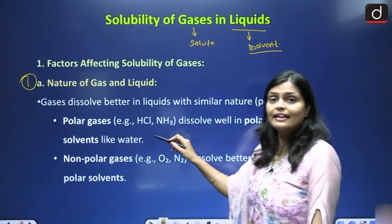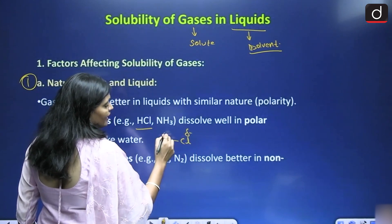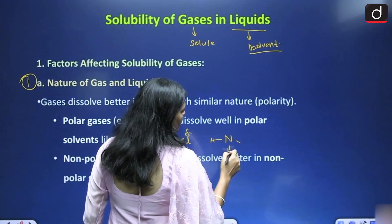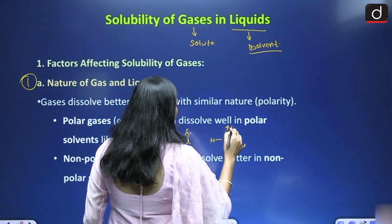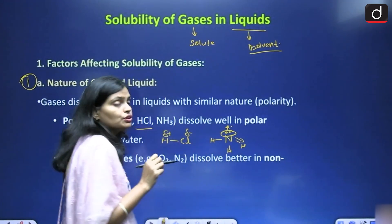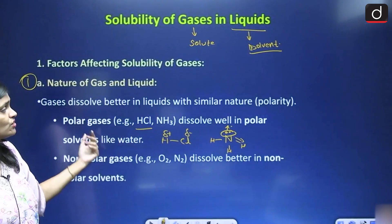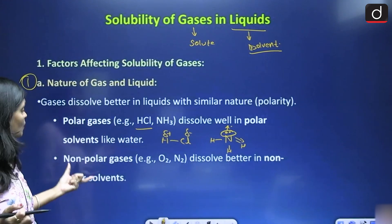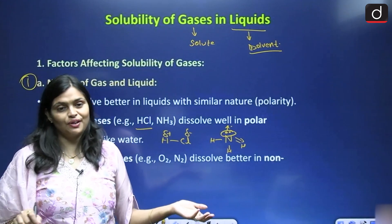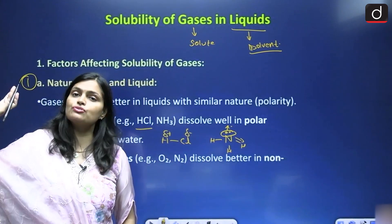The gas which is polar in nature dissolves in a liquid or in a polar solvent very easily. Polar gases like HCl - why HCl is polar gas? Because Cl is electronegative, H plus, so becomes polar. NH3 - here you have two lone pairs. N is more electronegative than hydrogen, so again you will get a polar compound. NH3 dissolves well in polar solvent like water. Nonpolar gases like O2, N2 dissolve better in nonpolar solvent. Like in case of solid in liquid.